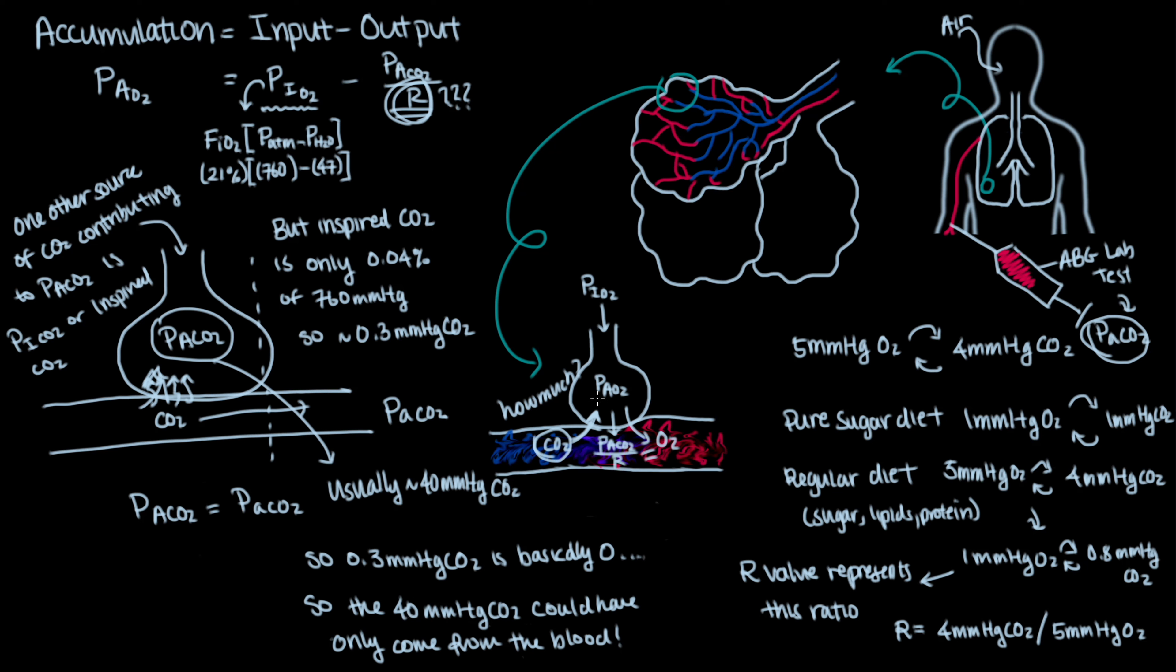All this to say that we used the amount of carbon dioxide in the alveolus to represent the net amount of carbon dioxide that was transferred from the blood into the alveolus. With that knowledge, we can calculate just how much oxygen was brought into the blood. Again, this term represents the output of oxygen in our accumulation equals input minus output concept.